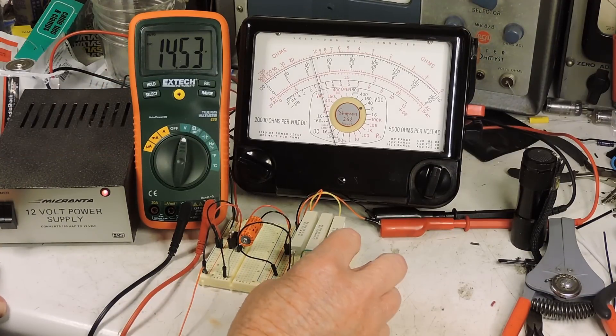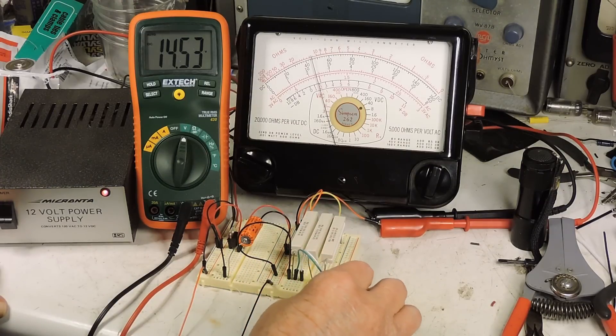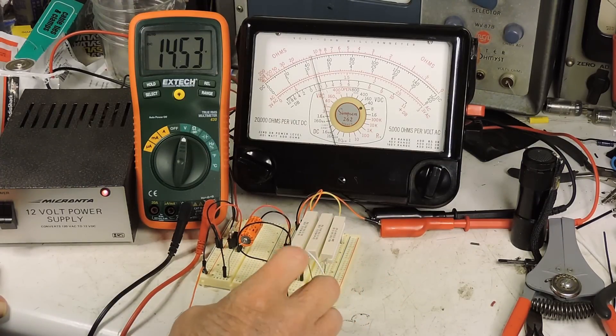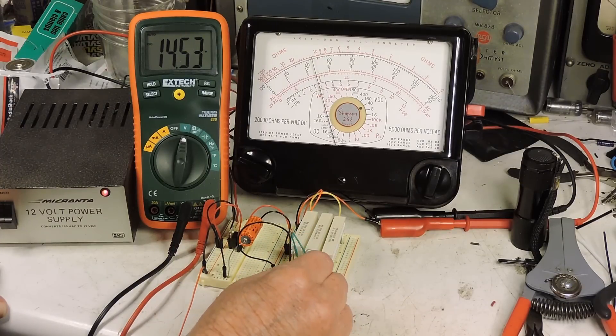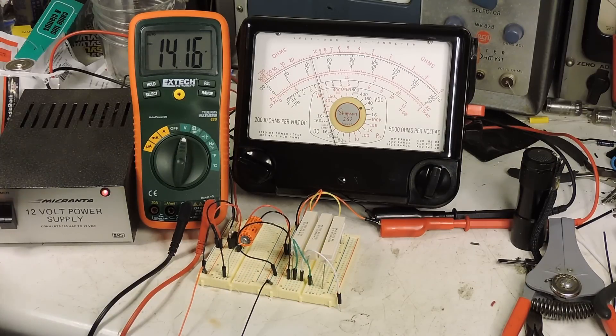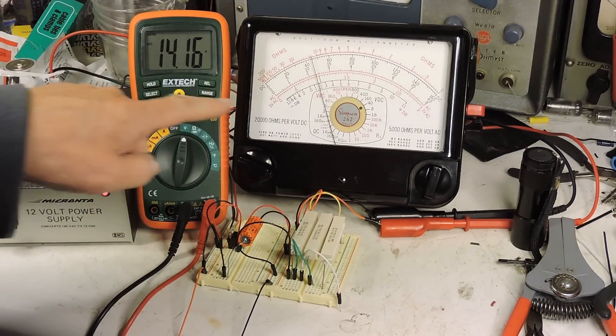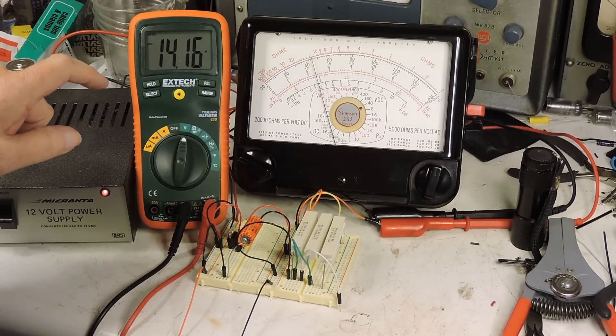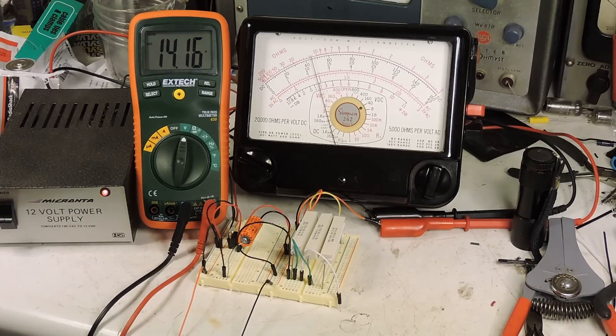Okay I'm going to add another 100 ohm resistor across this one which will make 50 ohms across the regulated output. And again almost nothing happened here. This is reading the output. But here we're at 14.1.